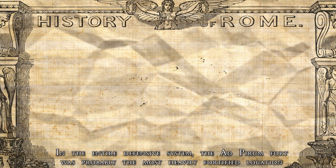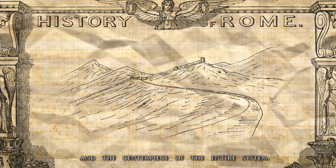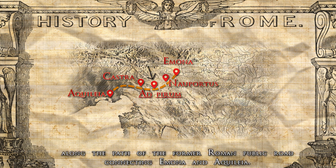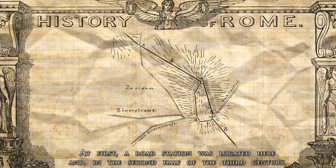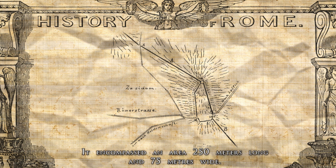In the entire defensive system, the Ad Pirum fort was probably the most heavily fortified location and the centerpiece of the entire system. It was located at the highest point of the Hrusica plateau, along the path of the Roman public road connecting Emona and Aquileia. At first a road station was located here, and in the second half of the 3rd century the hamlet was fortified with thick walls that followed the uneven hilly terrain, encompassing an area 250 meters long and 75 meters wide.